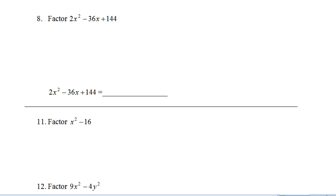In number 8, we should notice that all of these coefficients are divisible by 2. So I can pull a 2 out of here first. I get 2 brackets x squared minus 36x plus 72. Now I need two numbers that add to negative 36 and multiply to 72.